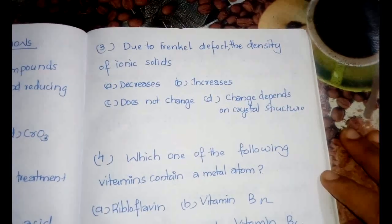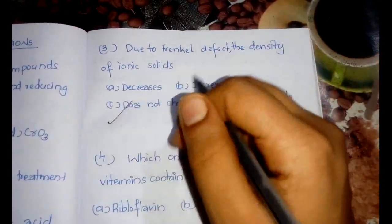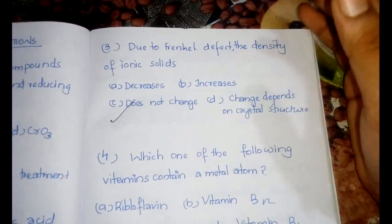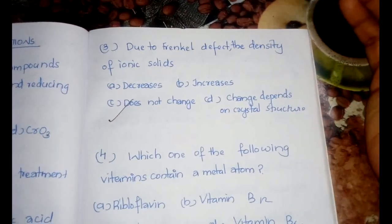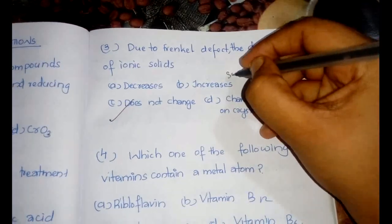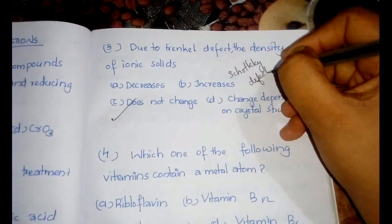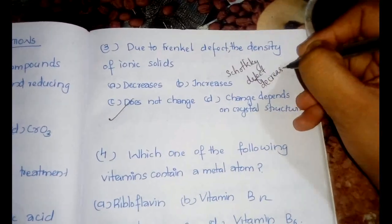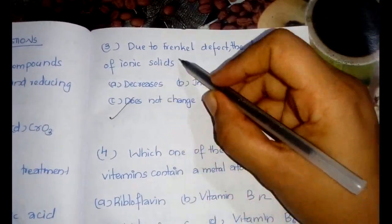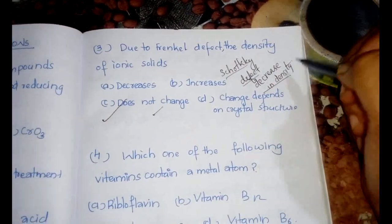The third question is: due to Frenkel defect, the density of the ionic solids does not change because that defect does not cause any change in the total number of particles in the particular solid. But in case of Schottky defect there would be a decrease in density. So you have to remember in case of Frenkel defect there is no change in density and in Schottky defect there would be a decrease in density.